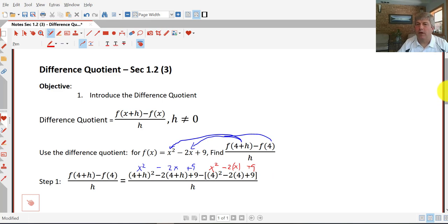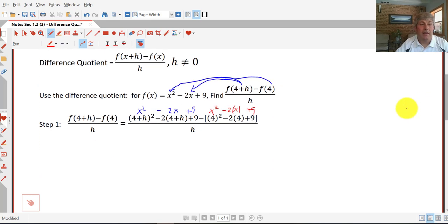So I've got everything subbed into my difference quotient here, and now we simplify. So 4 plus h squared, knowing our patterns, that's 16 plus 8h plus h squared minus 8 minus 2h plus 9, minus this whole quantity of 16 minus 8 plus 9. We have to keep simplifying.